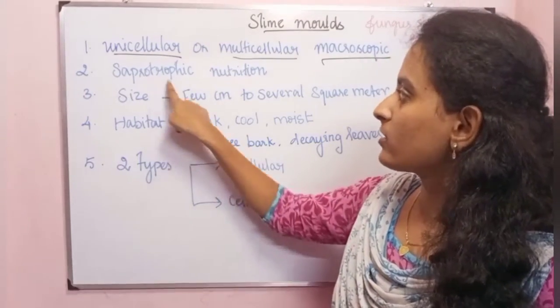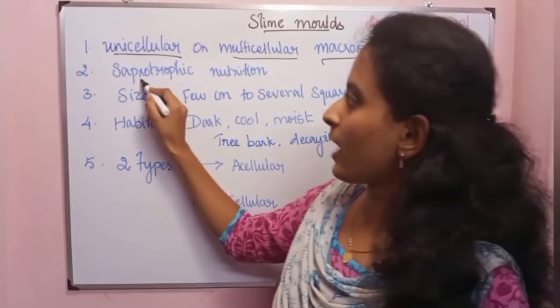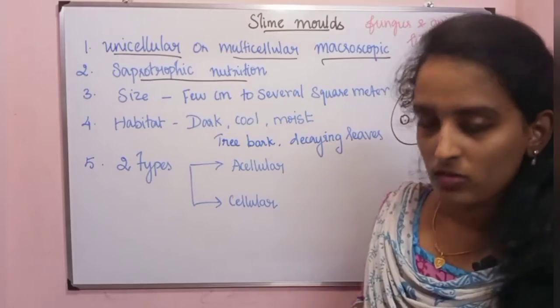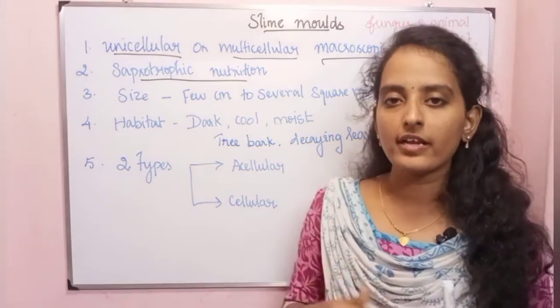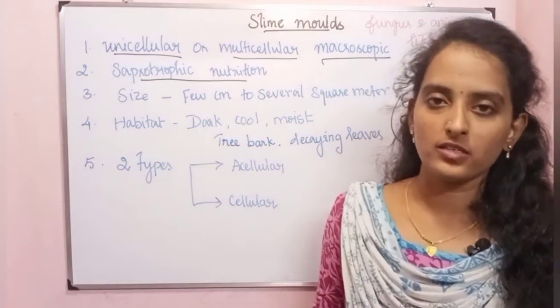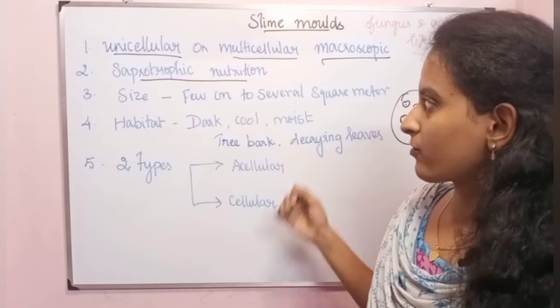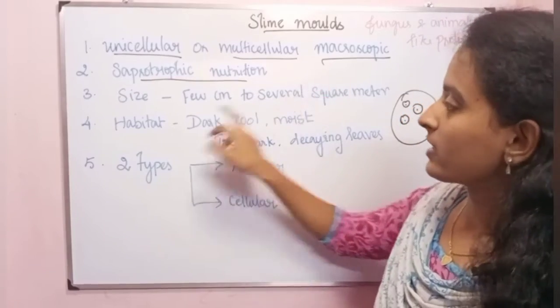The second characteristic is saprotrophic nutrition — slime molds feed on dead and decaying matter using saprotrophic nutrition.